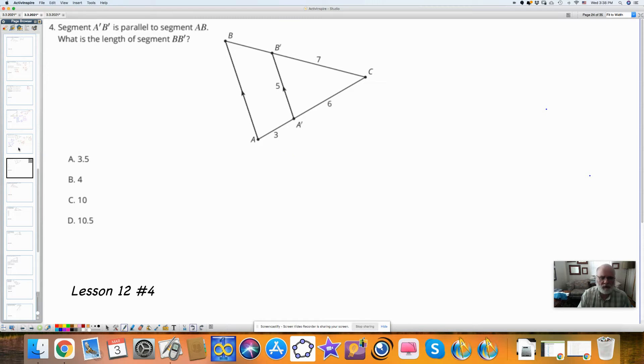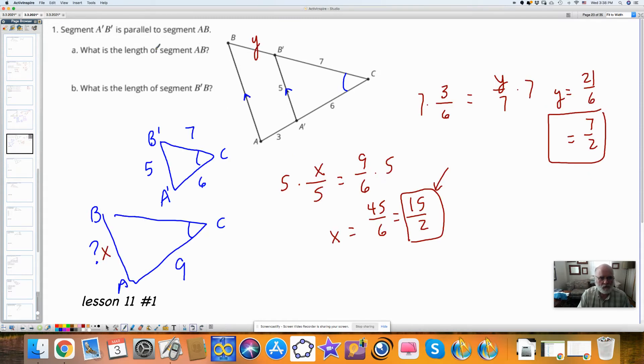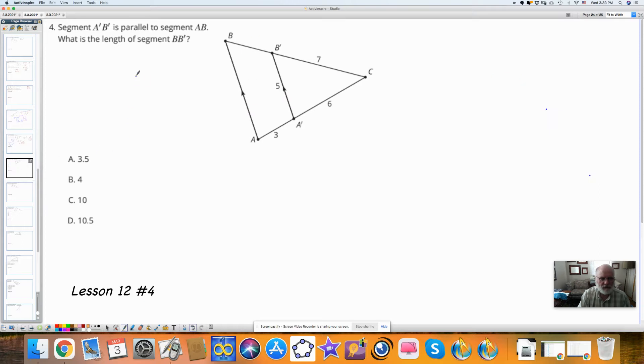This question looks an awful lot like the one we did last time, which was this question, where we actually had to find the length of AB and find the length of BB prime. We found that it was 7 halves. So here we're asked to find what is the length of BB prime. And it's going to be 7 halves, which is 3 and a half. But let's just work through it to show that we know what we're doing.